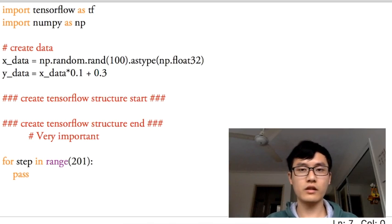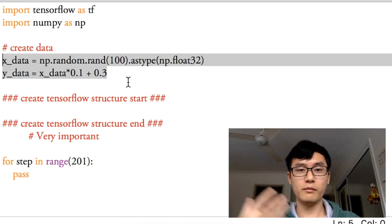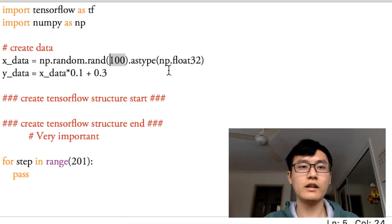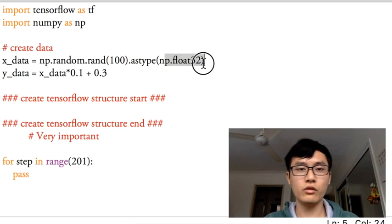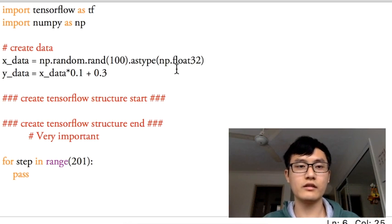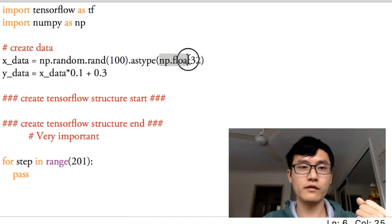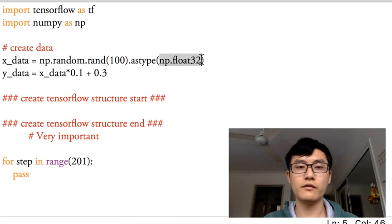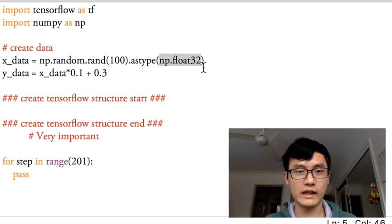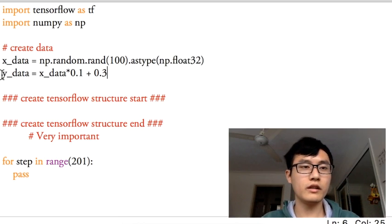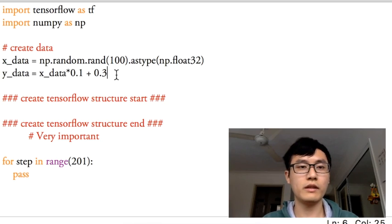We have data that we make up using NumPy random, generating 100 samples as the float32 type. I should emphasize that in TensorFlow, all calculations are basically float32. If you use other formats or types, TensorFlow may not support that, so make sure all your data is kept in this format. We're going to predict Y data equals X data times 0.1 plus 0.3.